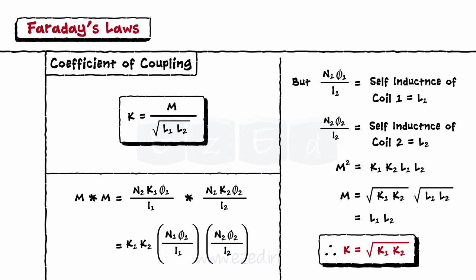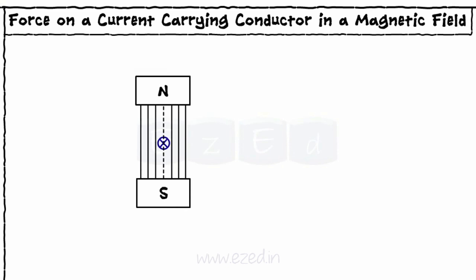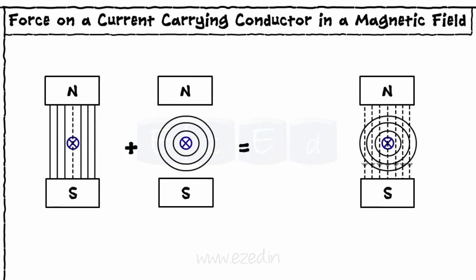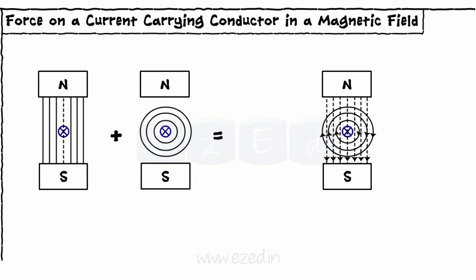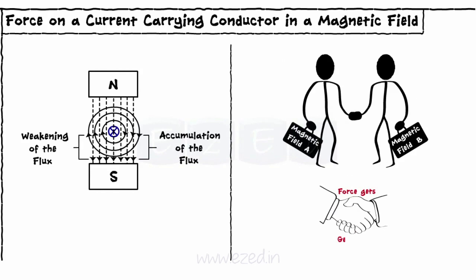Consider the conductor placed between two magnetic poles. Here we get two magnetic fields: one due to the magnets itself, and the second field generated around the conductor when the current flows through it. These two fluxes interact with each other such that on one side both fluxes are in the same direction, and on the other side their direction is opposite. Hence, we get accumulation of flux on one side and weakening of flux on the other side. Whenever two magnetic fields interact with each other, a force gets generated whose direction is determined by Fleming's rules.